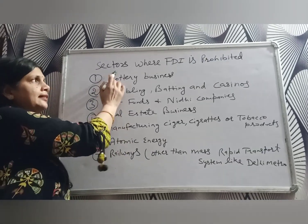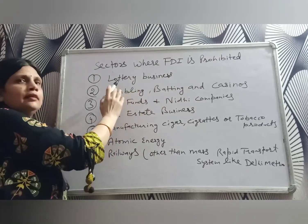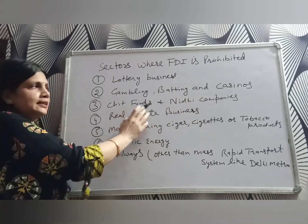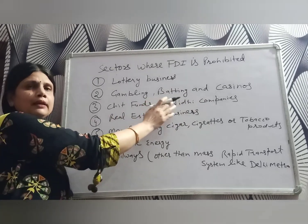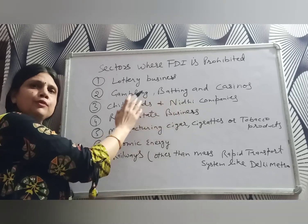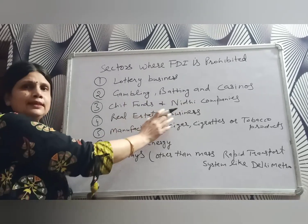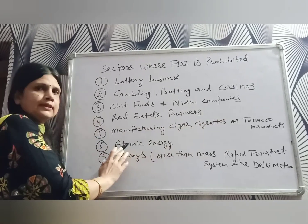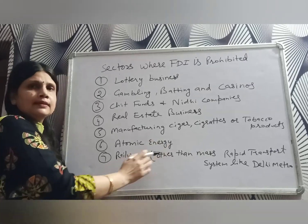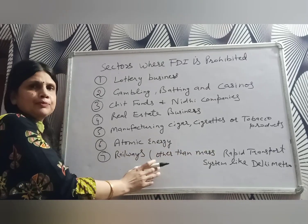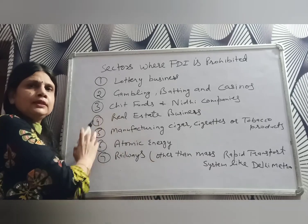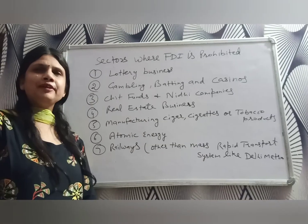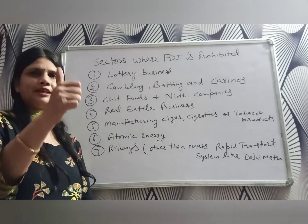The next topic is sectors where FDI is prohibited: lottery business, gambling, betting and casinos, chit funds and Nidhi companies (which are non-banking financial companies), real estate business, manufacturing of cigars, cigarettes, or tobacco products, atomic energy, and railways other than mass rapid transport systems like metros. These are the areas where FDI is prohibited. For more videos, please like, share, and subscribe to the channel.